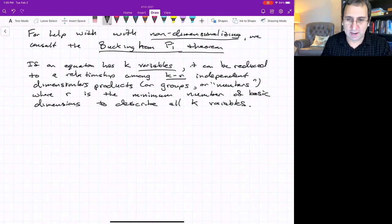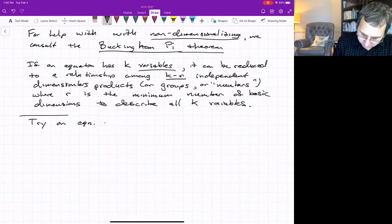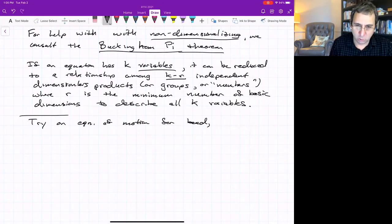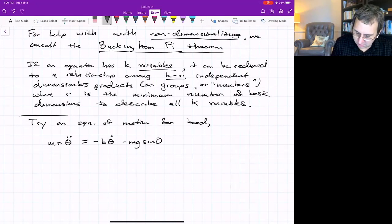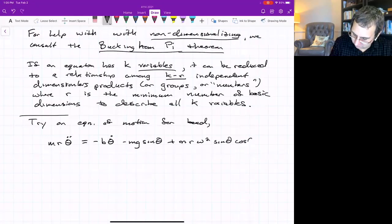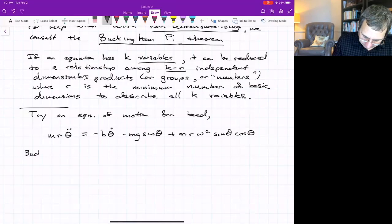So there's something interesting here. There's this number k and this number k minus r. Let's just rewrite what we have. Try on the equation of motion for the bead. So that was equation one. m r theta double dot equals minus b theta dot minus m g sine theta plus m r omega squared sine theta cosine theta.